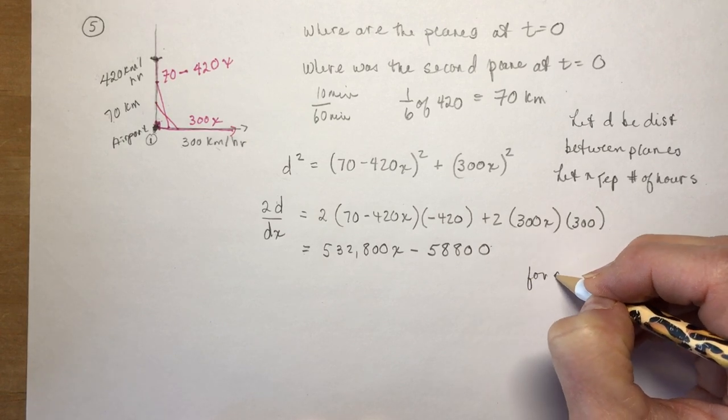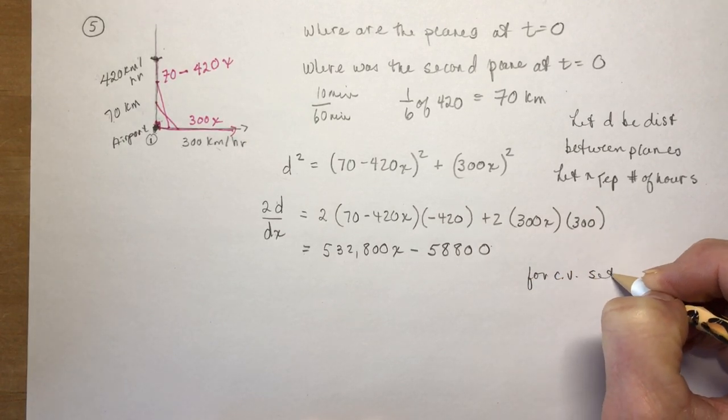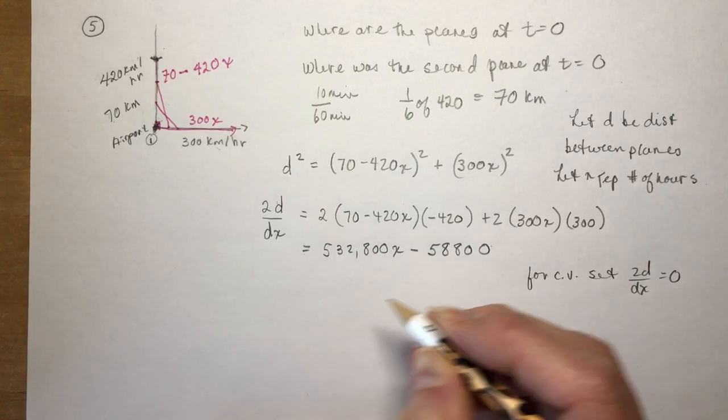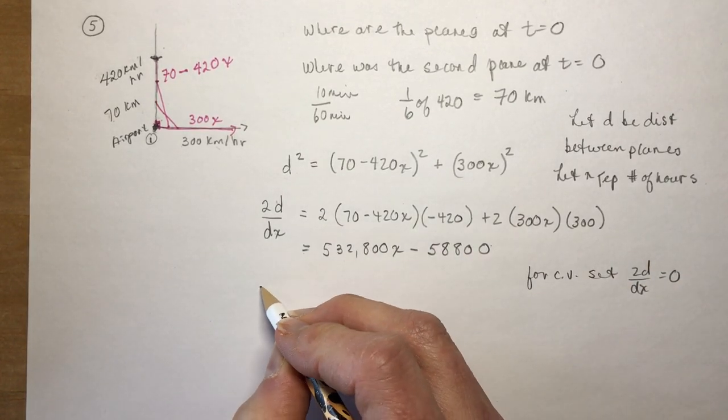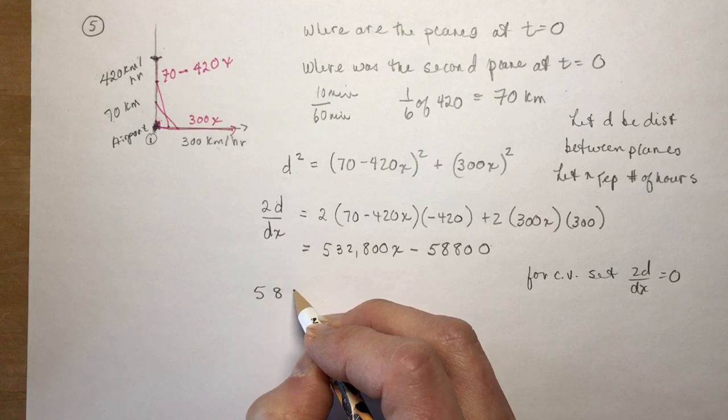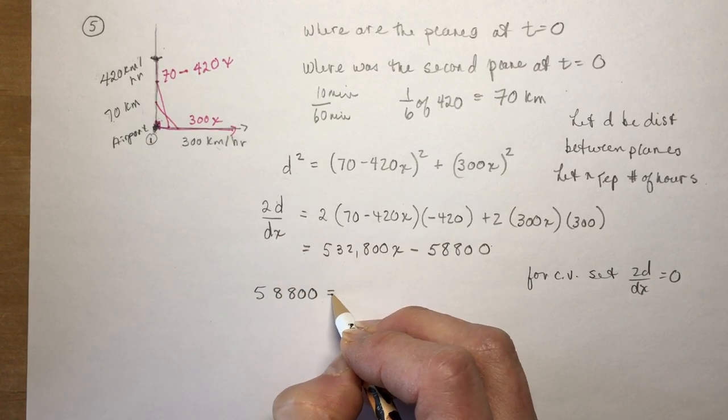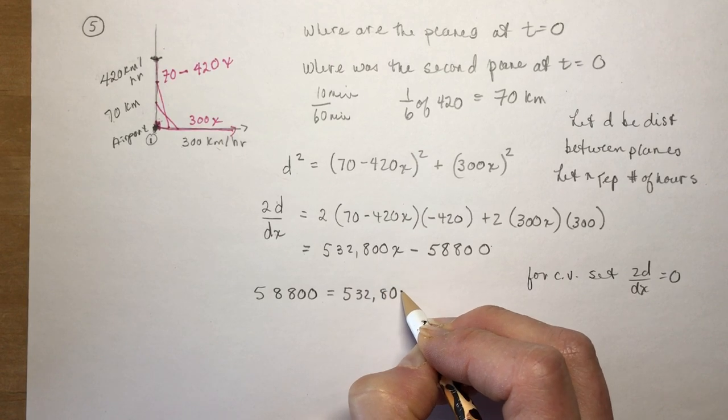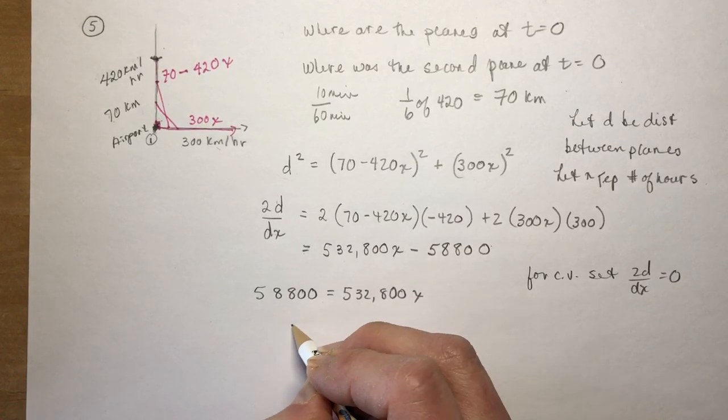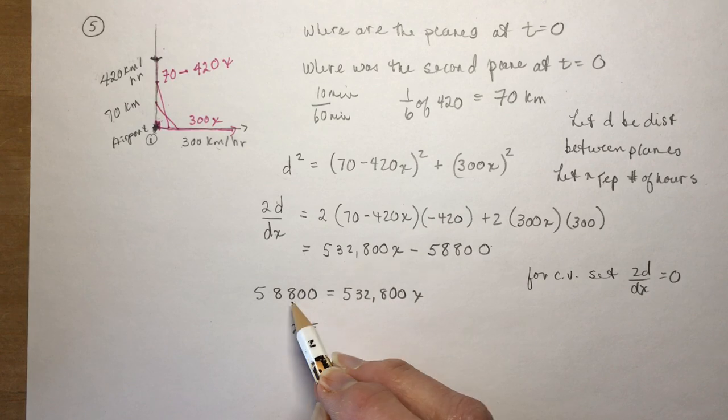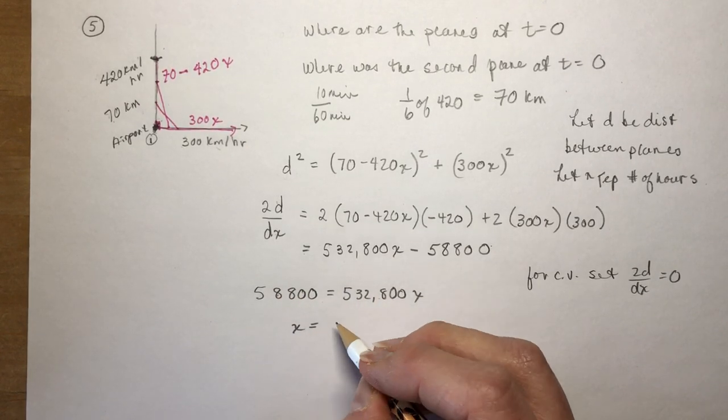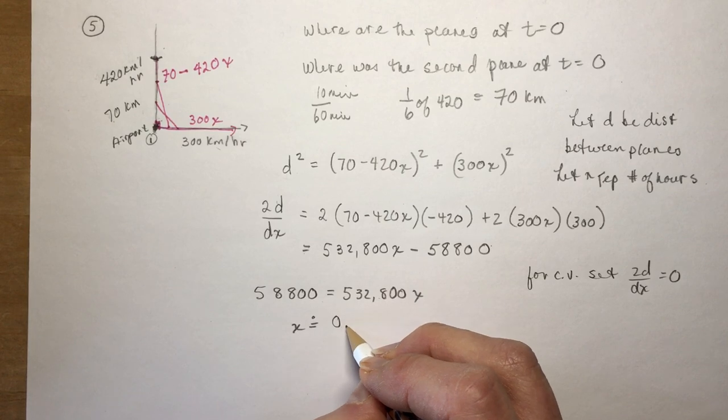So I'm going to say for critical values set 2d(dd/dx) equal to zero. So if I set this equal to zero I just get 58,800 is equal to 532,800x and so x is going to be this divided by this, make sure you divide the right one, and you should get x is approximately 0.11.